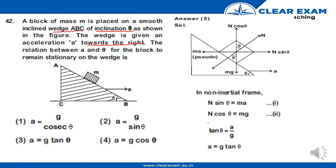We need to find the relation between a and theta for the block to remain stationary on the wedge. The options are: option 1 - a equals g upon cosine theta; option 2 - a equals g upon sine theta; option 3 - a equals g tan theta; option 4 - a equals g cos theta. This is the wedge ABC and this is the block of mass m.